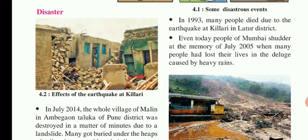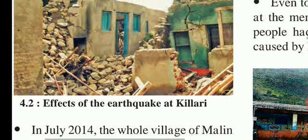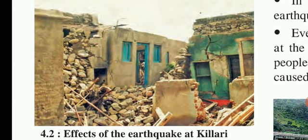In Mumbai in July 2005, there was a lot of heavy rain and many people lost their lives and all their properties were lost. In the picture you can see there was an earthquake in Killari — because of the earthquake the building has fallen down. The building has fallen down and lives were lost.